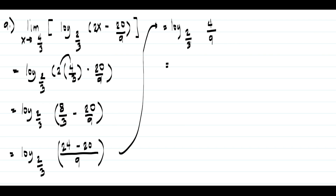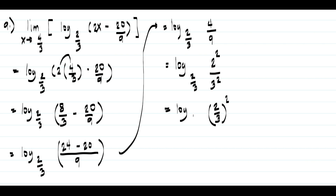To match the base, we write 4/9 as (2/3) raised to 2, since 2 squared over 3 squared equals 4/9. So we have log((2/3) raised to 2) to the base 2/3. Using the identity log(a^n) to the base a equals n, the answer equals 2. This will be our answer.